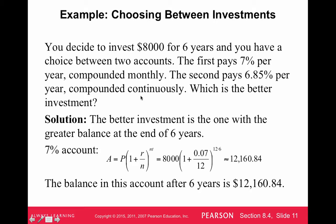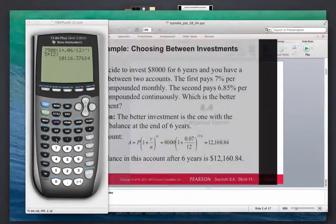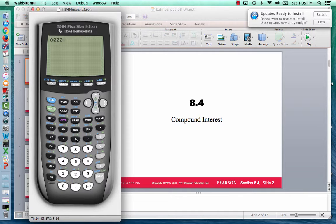We have to invest $8,000 over six years, and you have a choice between two accounts. The first pays 7% per year compounded monthly, and the other pays a slightly lower rate but compounded continuously. If we plug $8,000, six years, 7%, and monthly into the compound interest formula: $8,000 times 1 plus 0.07 divided by 12, to the power of 6 times 12, we get $12,160.84.